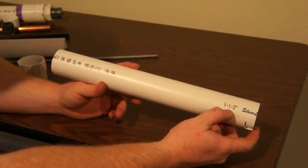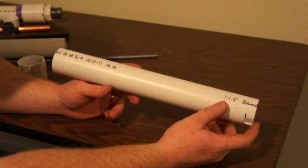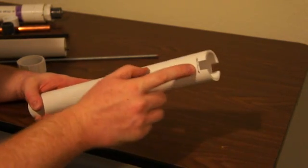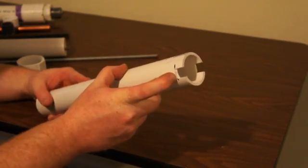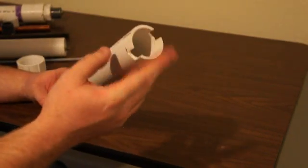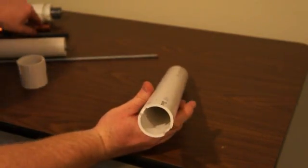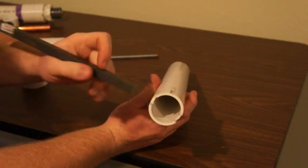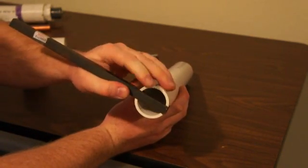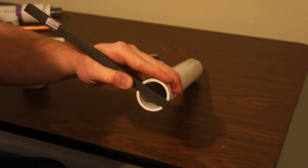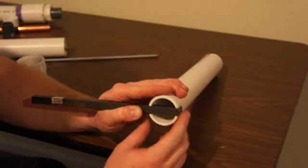I'm going to start off with inch and a half schedule 40 PVC pipe. You'll need to put a half inch notch in the end of it centered up. This half inch notch is for a piece of half inch steel, half inch square steel.